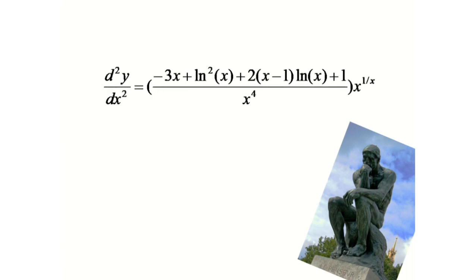Now if we calculate the double derivative of this function and put x equals to e in this expression, we will get minus e to the power 1 by e minus 3, which is smaller than 0.